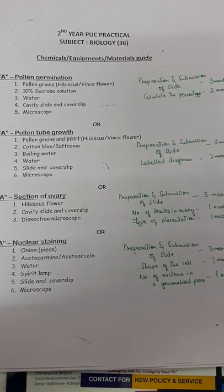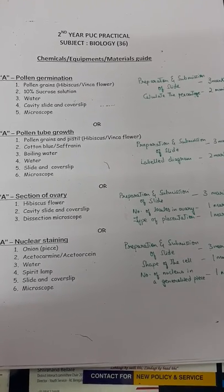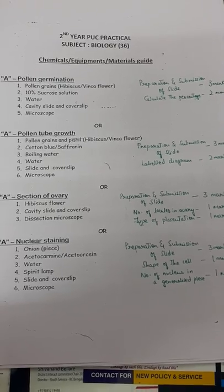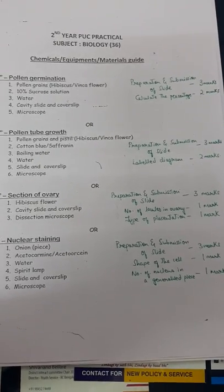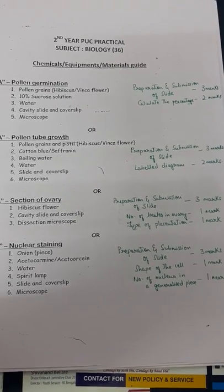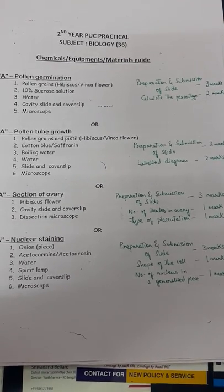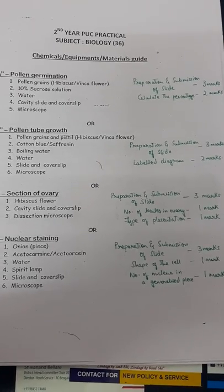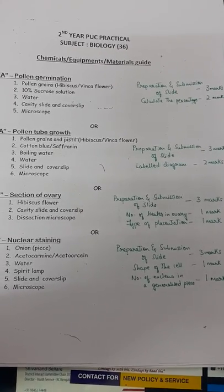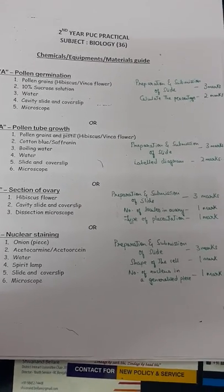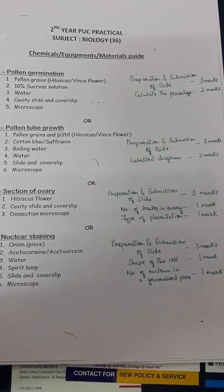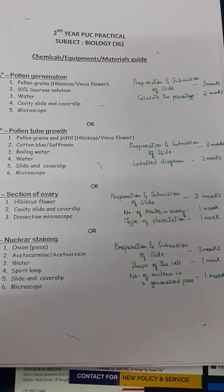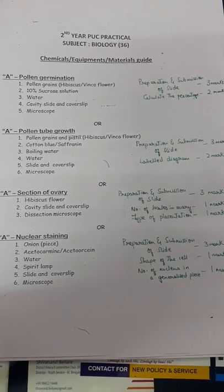The third choice for A is preparing a section of ovary. They might give you a hibiscus flower ovary. Preparation and submission of slide gets three marks, counting the number of locules in the ovary gets one mark, and identifying the type of placentation gets one mark. For hibiscus, it's a pentalocular ovary with axial placentation.